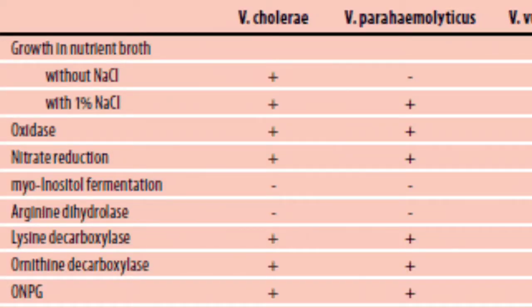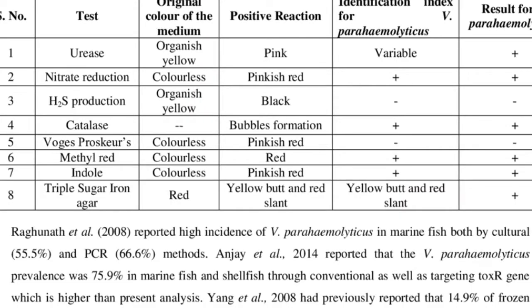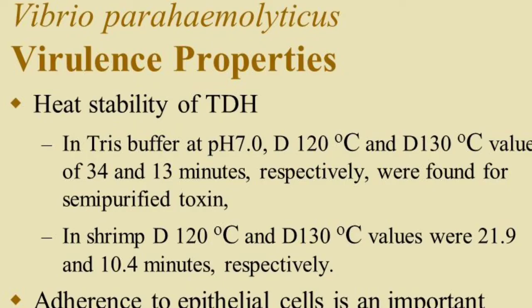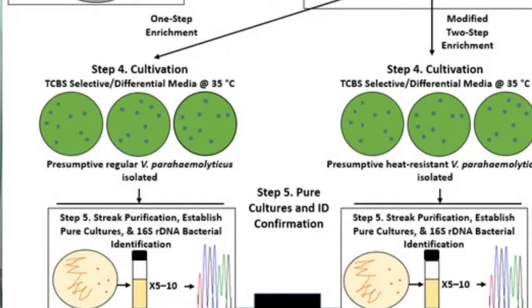The arginine glucose slant: streak the slant, stab the butt, and incubate with the cap loose overnight. Both Vibrio parahaemolyticus and Vibrio vulnificus produce an alkaline slant and acid butt which is yellow. Acid butt is yellow because arginine dehydrolysis is negative. But no gas or H2S in arginine glucose slant we can observe. Then we will go for further confirmatory test.